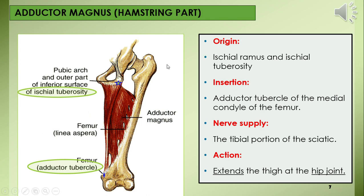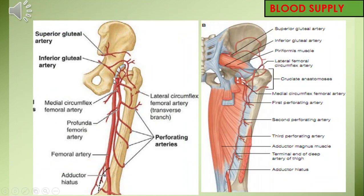Adductor magnus has two parts. The adductor part arises from the ischiopubic ramus and inserts on the linea aspera. The hamstring part, discussed here, arises from the ischial tuberosity and is inserted on the adductor tubercle. The nerve supply of this part is from the tibial part of the sciatic nerve, while the adductor part is supplied by the obturator nerve. The action of this part is extension of the thigh at the hip joint; it does not act on the knee joint and produces no rotation at the knee.